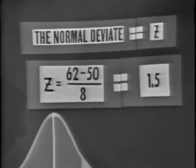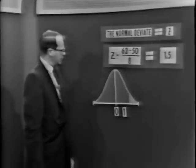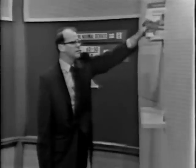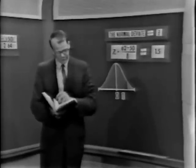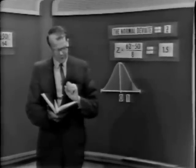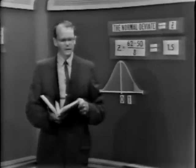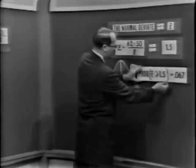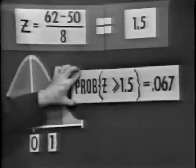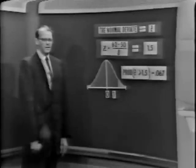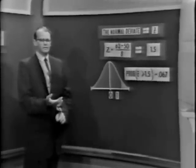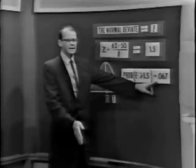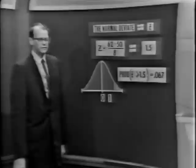Now the question is: what's the probability we'll observe a normal deviate equal to 1.5 or something greater? We're once again trying to discover the area in the tail of the curve. Fortunately, that's tabulated. Looking up Z equal to 1.5 in the table of areas under the normal curve leaves 0.067 in the tail. The probability that we'll observe a value of Z greater than 1.5 is equal to 0.067. That's the same as our original problem — the probability of getting Y greater than or equal to 62, given mean of 50 and variance of 64, is also 0.067.